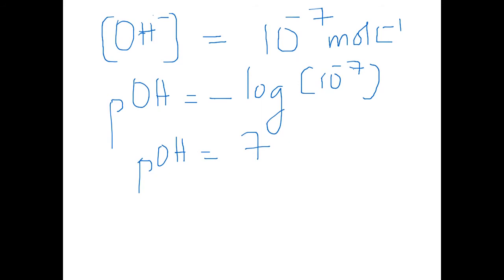Now if you add pH and pOH, it equals 7 plus 7, which equals 14. We have a pH scale that starts from 0 to 14.